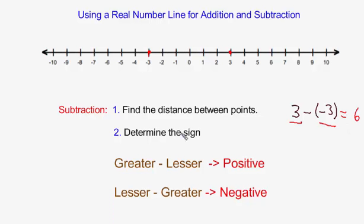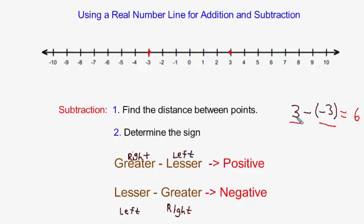So I write equals 6, but then I have to determine the sign — should it be positive 6 or negative 6? When you subtract integers, the sign is determined by whether you took a greater number and subtracted a lesser one, or vice versa. Numbers to the right are always greater; numbers to the left are lesser. Positive 3 is further to the right than negative 3, so we took a greater value minus a lesser value — a right minus left — meaning the result is positive 6.